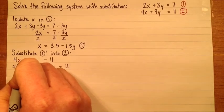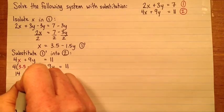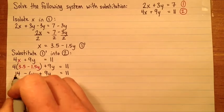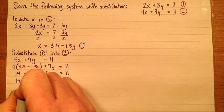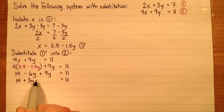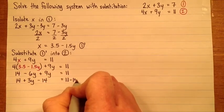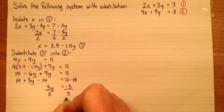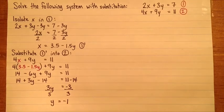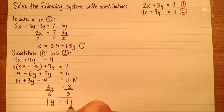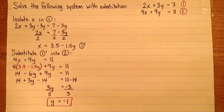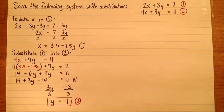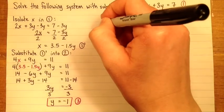4 times 3.5 is 14. 4 times negative 1.5 is negative 6. So that'll be minus 6y plus 9y equals 11. So here I'll have 14, and then minus 6y plus 9y is 3y. And then on this same line I'll subtract 14 from both sides. So I'll get 3y equals negative 3. And then I'll divide by 3 to get y equals negative 1. Perfect. So this is important, we're going to use it. And it's a combination of equation 1 and equation 2, so I'll call it 3.